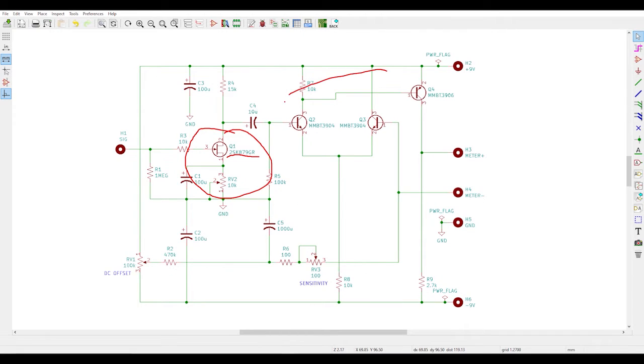Moving on, Q2 through Q4 make up a simple three-transistor op amp. Rod's design uses the BC549 and 559, but I think I can use the MMBT3904 and 3906 here. If you're not familiar with those, the MMBT just means it's the surface mount version of the through-hole 2N3904 and 3906.